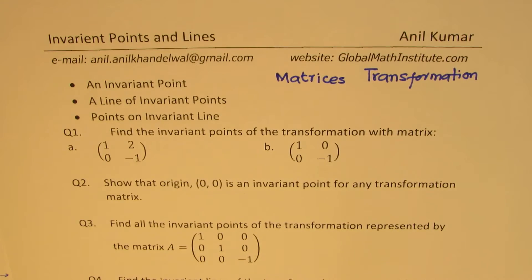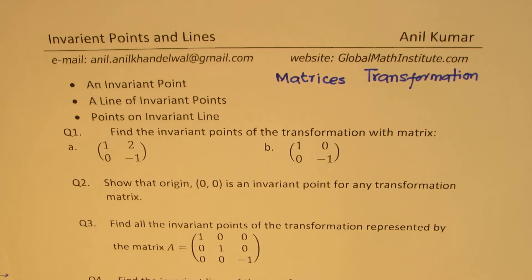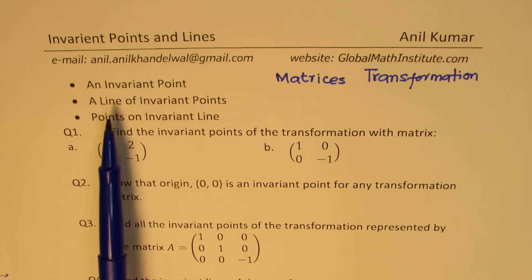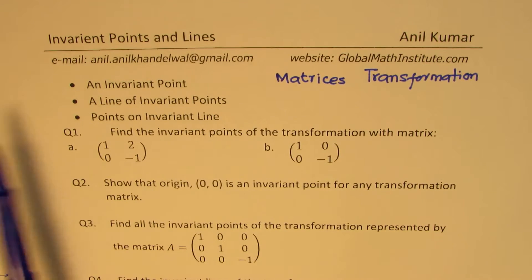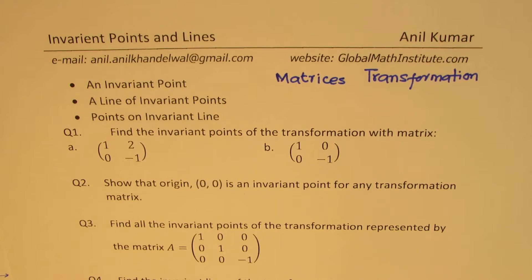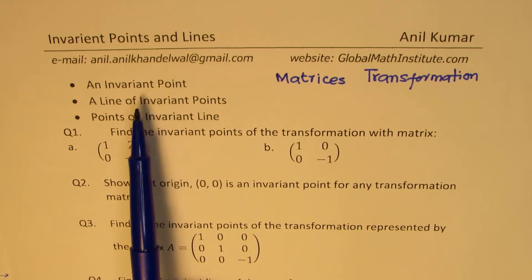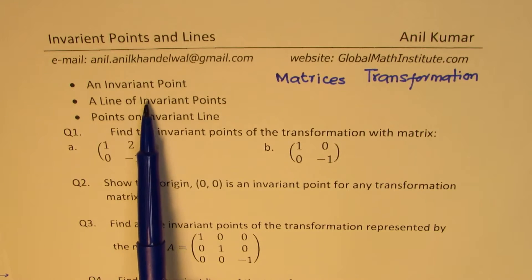Whenever you have a transformation, whether it is a rotation, reflection, or translation, there are some points which do not move. Those are called the invariant points. We'll talk about an invariant point, a line of invariant points, and points on an invariant line. These two things are slightly different — in the second case, the line is not moving at all. All the points are stationary on that line.